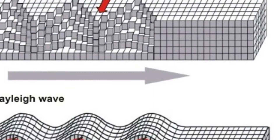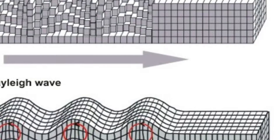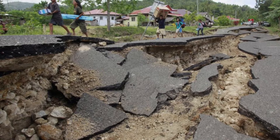There are two types: the Love wave, which is the fastest and has a side-to-side movement, and the Rayleigh wave, which rolls along the ground and causes most of the shaking from an earthquake.